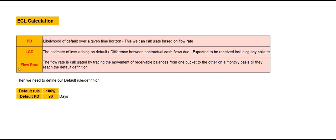We should also know about the flow rate. The flow rate is calculated by tracing the movement of receivable balances from one bucket to another on a monthly basis until they reach the default definition. We calculate the flow rate to identify the probability of default by comparing the movement in receivable balances from one bucket to the other. I will show you this when I explain the Excel calculation to calculate the ECL.